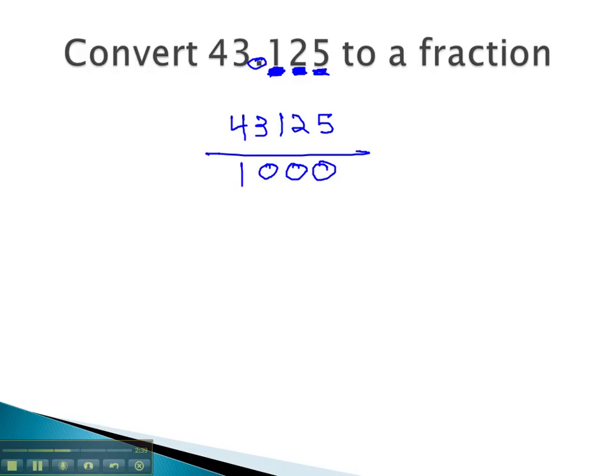Now we simply have to reduce this fraction. The last digits of both are 0 and 5. That tells us that both numbers are divisible by 5, so let's divide both numbers by 5. 5 goes into 43, 8 times, into 31, 6 times, into 12, 2 times, into 25, 5 times. And 5 goes into 10 twice with 2 more zeros after it.